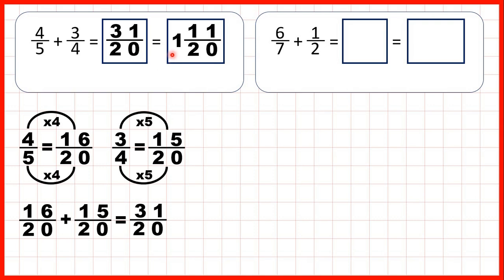Or, thinking about it another way, one times twenty is twenty, and then we need eleven more to get to thirty-one. Now we have six-sevenths plus one-half.